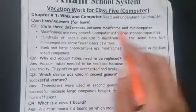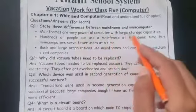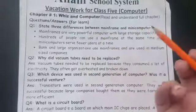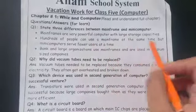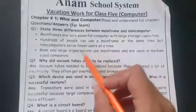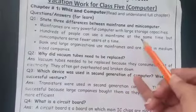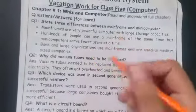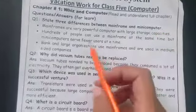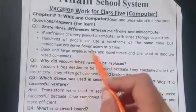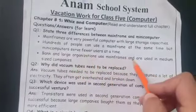State three differences between mainframe and minicomputer. Mainframe computers are very powerful with large storage capacities. Hundreds of people can use a mainframe at the same time, but minicomputers support only a few users at a time. Banks and large organizations use mainframe computers, while minicomputers are used in medium-sized companies.